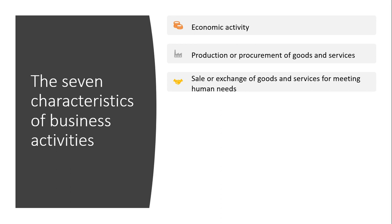The third characteristic involves sale or exchange of goods and services for satisfaction of human needs. Business involves transfer or exchange of goods and services for value. If goods are produced not for the purpose of sale but for internal consumption, it cannot be called a business activity.